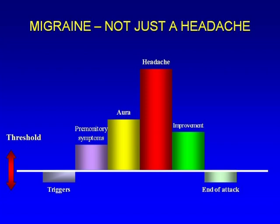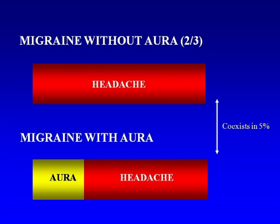Some people then experience auras, followed by the pain phase, which lasts anywhere from four to 72 hours. Afterwards there is an improvement phase — patients will tell you they feel tired and exhausted after an attack, which can be from medication or from the postdrome itself, which mirrors the prodrome symptoms. The pain is actually only one-fourth of the migraine syndrome or complex.